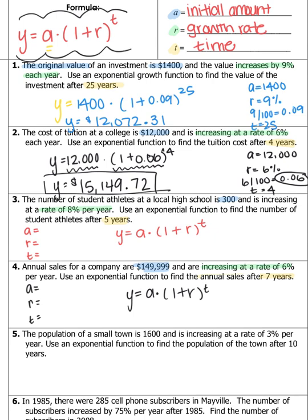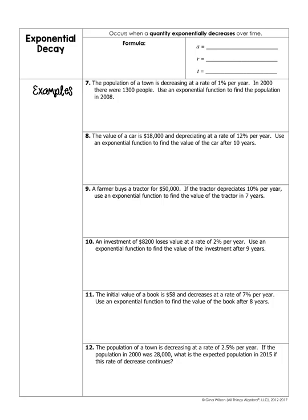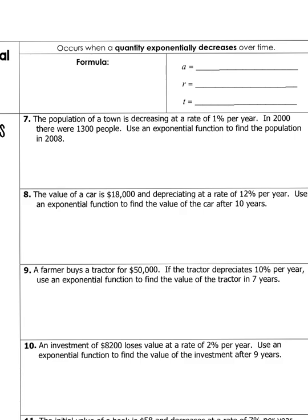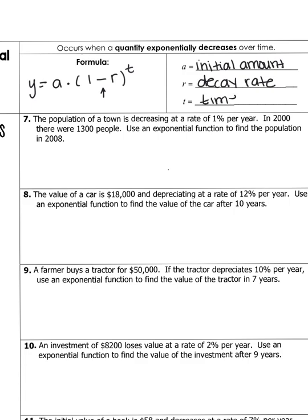Now let's do some exponential decay problems. Exponential decay occurs when a quantity exponentially decreases over time — for example, a population, a bank account, or the value of a car. The formula is very similar: y equals A times 1 minus r to the power of t. The only difference is that minus sign. A is the initial amount, r is your rate of decay, and t is time.